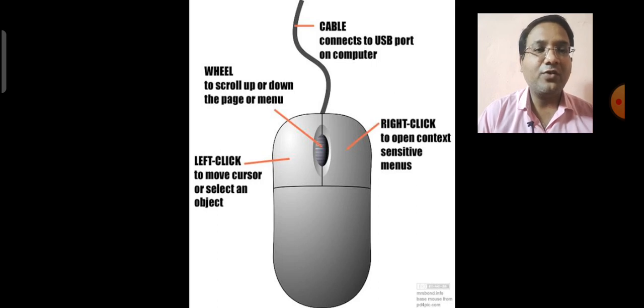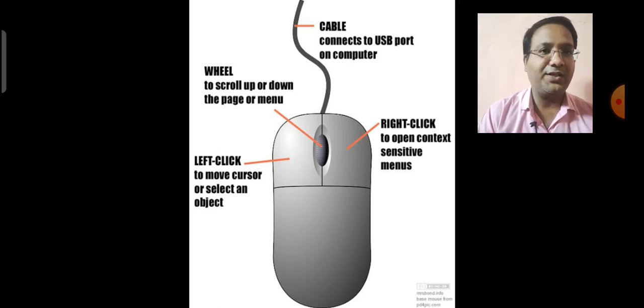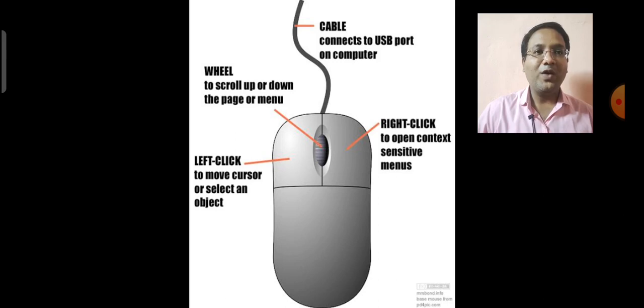Here you can see the picture of mouse. There are commonly three buttons. Left click to move cursor or select an object. Right click to open context sensitive menus. Wheel to scroll up or down the page or menu. And here one cable is there to connects to USB port on a computer.